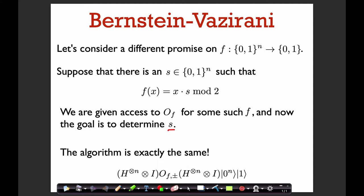We want to determine what s is. The quantum algorithm for this problem is exactly the same as in the Deutsch-Jozsa case: we're going to do a Hadamard on the first register, apply a phase oracle for f, and then again apply Hadamard on the first register. Let's go ahead and see why that works.